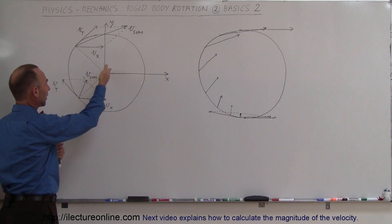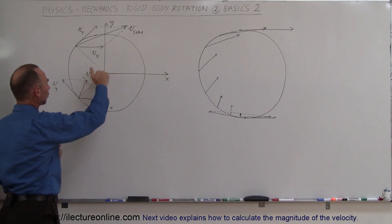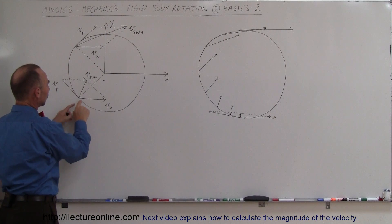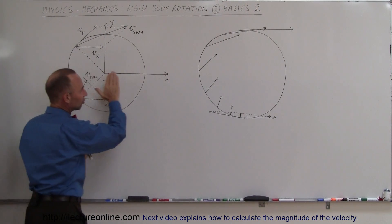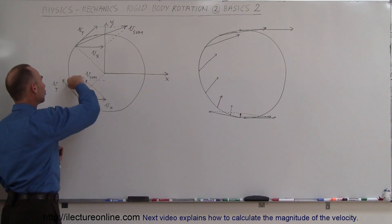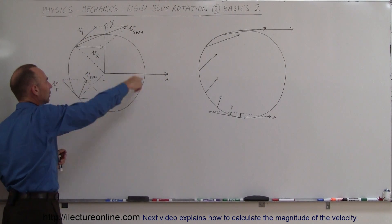Notice that we always have the translational motion of the object going to the right, V sub X, and then we have the tangential rotation of the wheel or tire going this way.